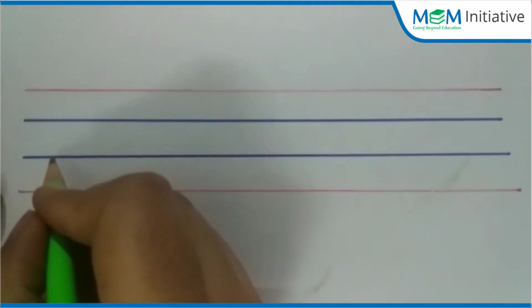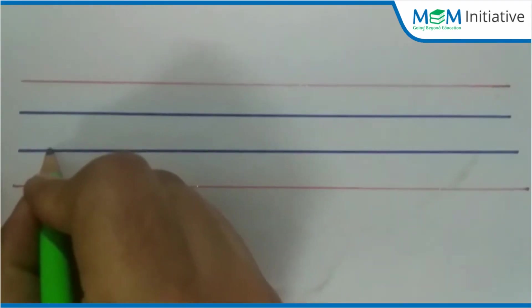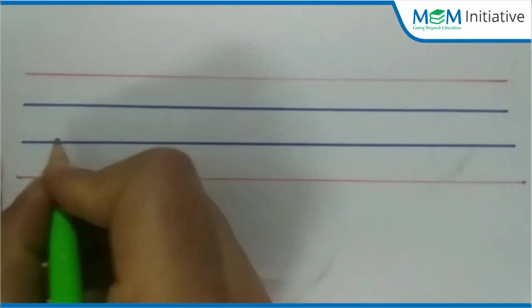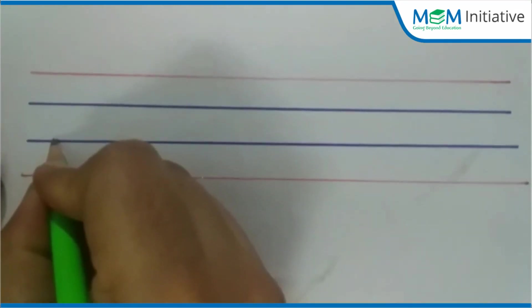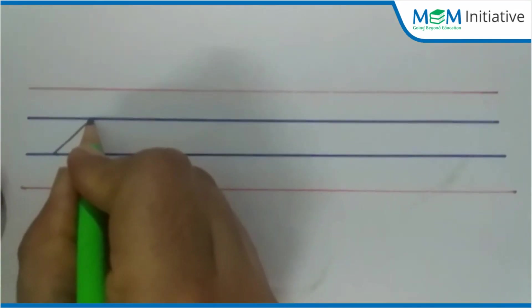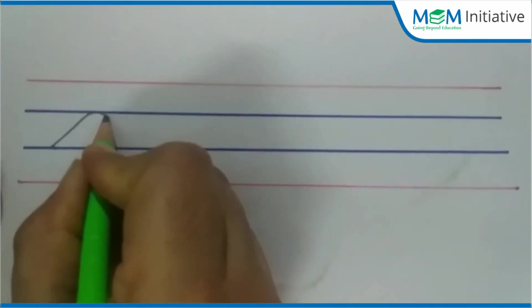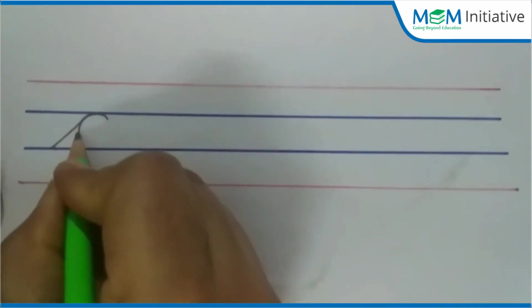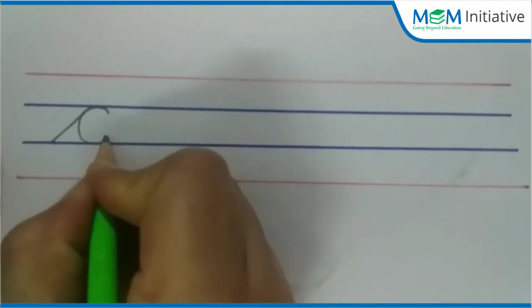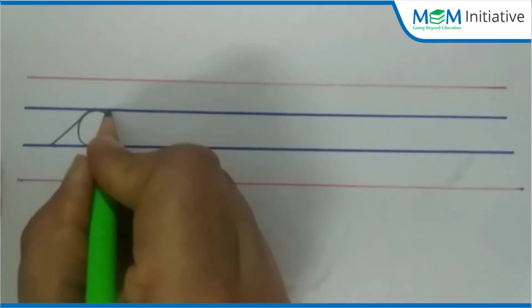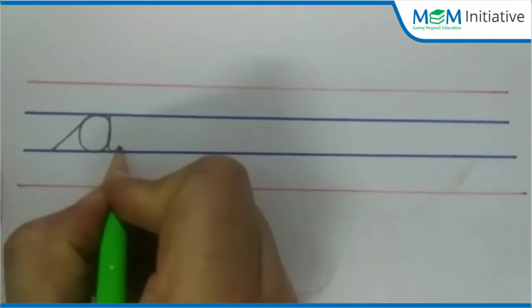Children, after practicing on dots we have to write ourselves. So here's how we're going to write. Slant line go up, then curve. Make C, come back, close its mouth, come down, and make its tail.